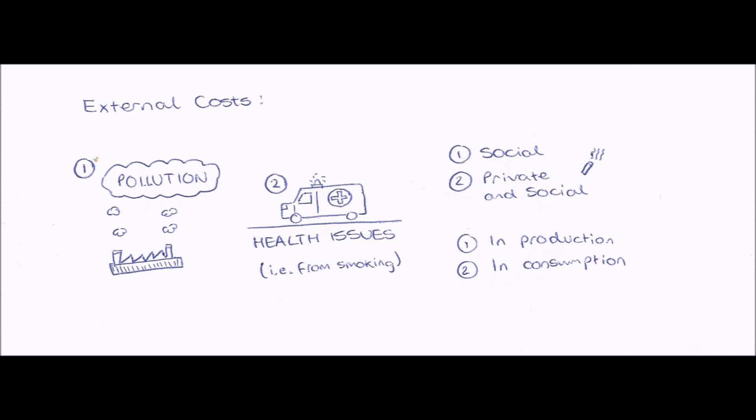Next, health issues, number two. These can be private and social. So for example, if we use the smoking idea, there will be private individual health issues. Because obviously if you smoke, you get things such as more yellow teeth, you get lung cancer and other health problems. But also there will be social external costs. There will be social health problems because of passive smoking.